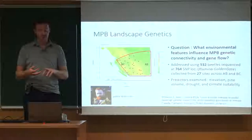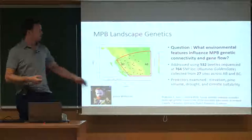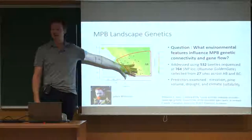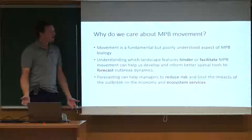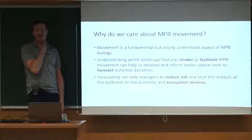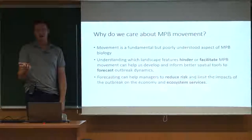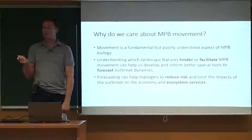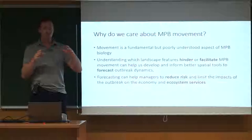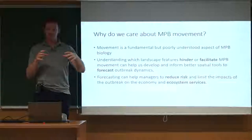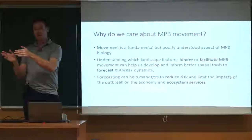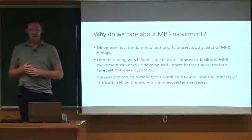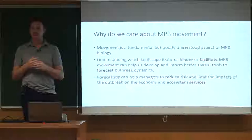We had potential predictors we had a priori reasons to suspect played a role in connectivity: elevation, pine volume, drought, and climate suitability — all remotely sensed data products. We know not that much about mountain pine beetle movement. They're actually not very good flyers — quite small, without a lot of fat or lipids — and can't actively move very far. Within a stand they can orient using pheromone plumes and move toward already-attacked trees.